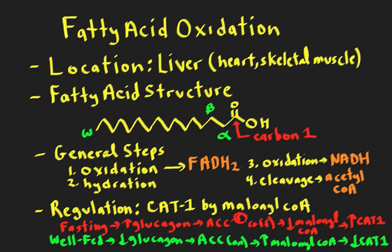The general steps of fatty acid oxidation are pretty simple — there are only four steps. The net result is that every time we go through a round of beta oxidation, we peel off an acetyl-CoA molecule. Remember, acetyl-CoA is two carbons. So every time we do a round of fatty acid oxidation, we reduce the fatty acid chain by two carbons.